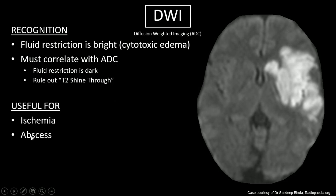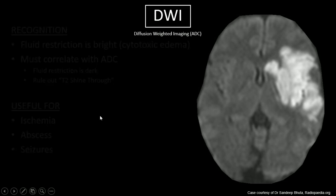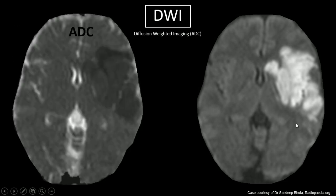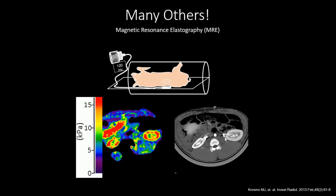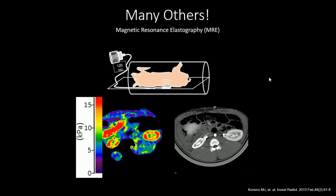DWI is useful for ischemia, abscesses, and seizures. Comparing DWI to ADC: bright on DWI, dark on ADC. There are a lot of other sequences we didn't go over — MRA, angiography, BOLD imaging, and many experimental sequences. I hope this talk was somewhat helpful to you. Have a fantastic day.